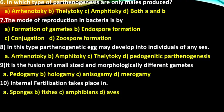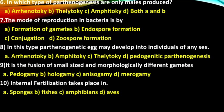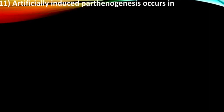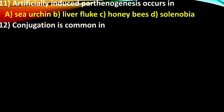Question 11: Options are Sponges, Fishes, Amphibians, Aves. The right answer is Aves. Except Aves, all others undergo external fertilization. Artificially induced parthenogenesis — options are Sea urchin, Liver fluke, Honeybees, Solinopia. The right answer is Sea urchin.